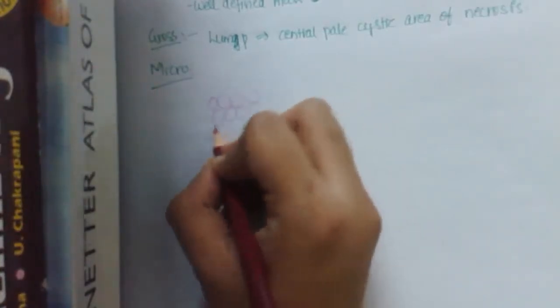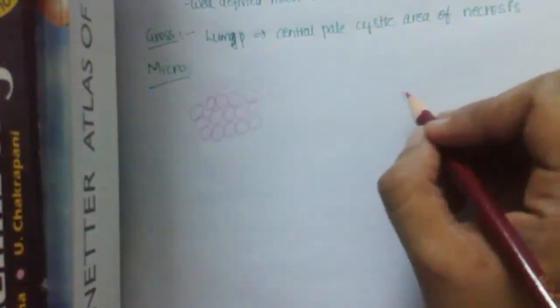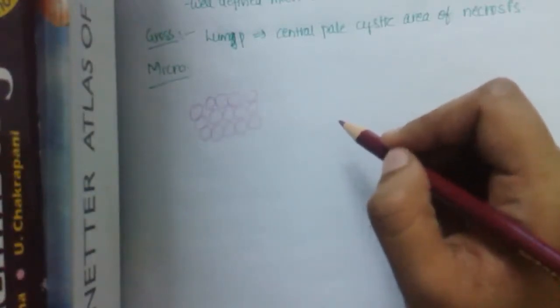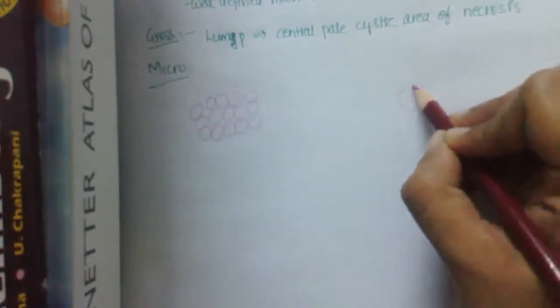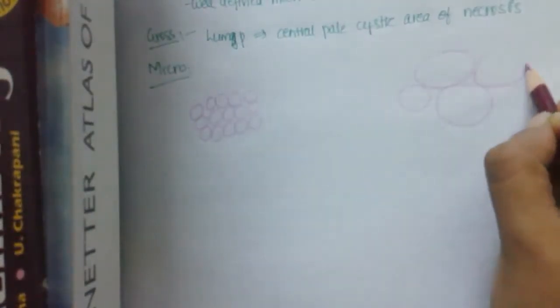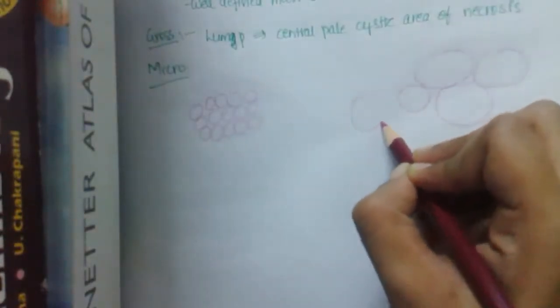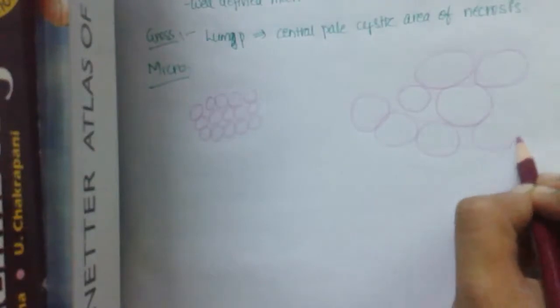So this is the normal adipose tissue which is present in any type of the body. So here there is no regular pattern in this adipose tissue. There is no regular pattern and there are many lipid filled spaces. These are the spaces which are filled with lipids.